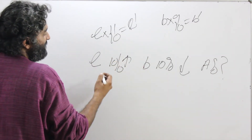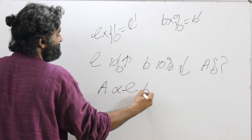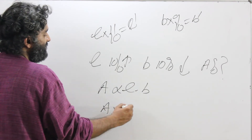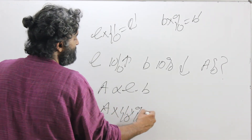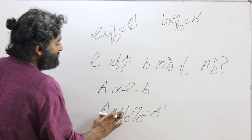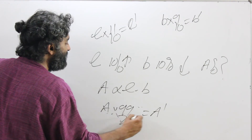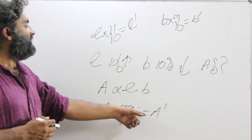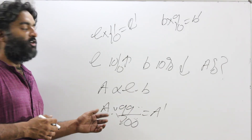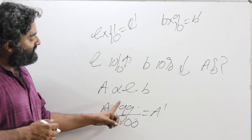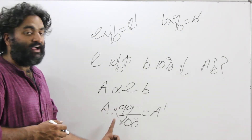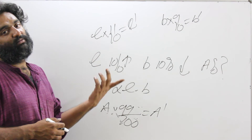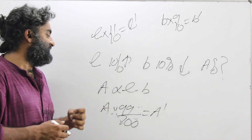Now I have the multiplying factor for length and breadth. Area is directly proportional to length and breadth, so both multiplying factors get multiplied to the area: area into 11 by 10 into 9 by 10 equals the new area. Working this out: area into 99 by 100 equals the new area. 99 by 100 means the new area is 99% of the old area, which is 1 by 100 — or 1% — less than the old area.